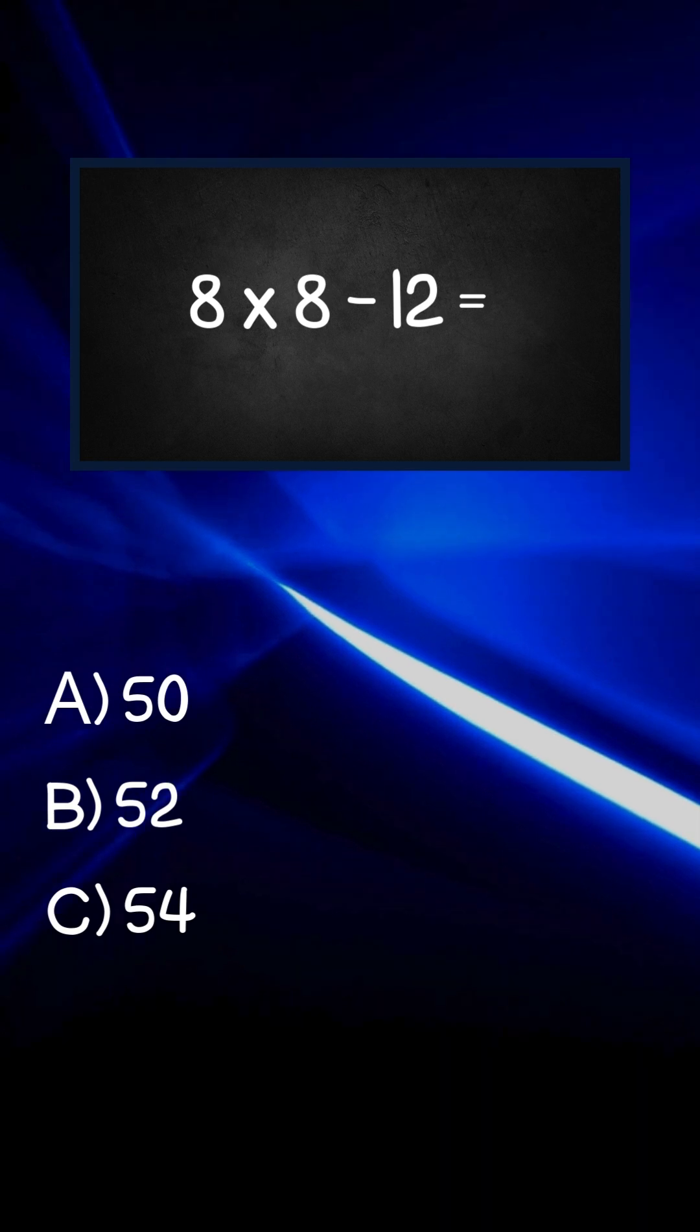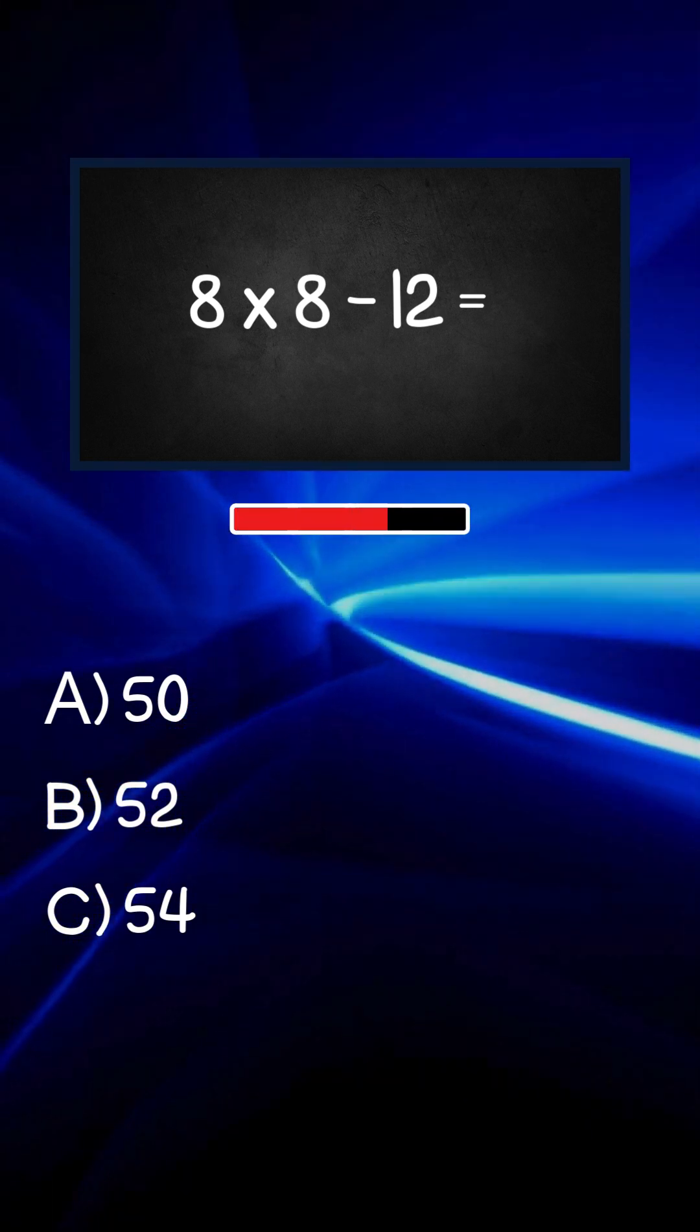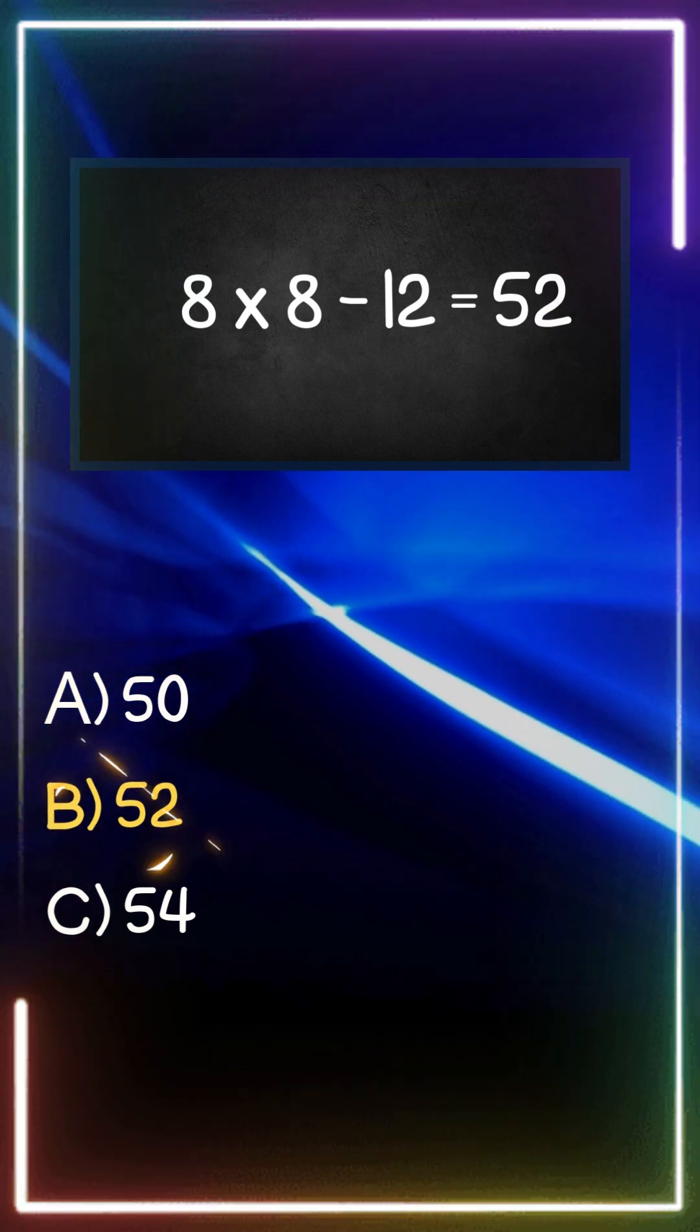What is 8 times 8 minus 12 equals to? Answer B, 52.